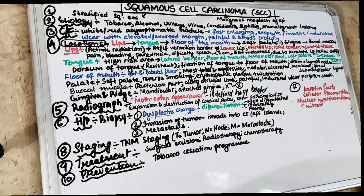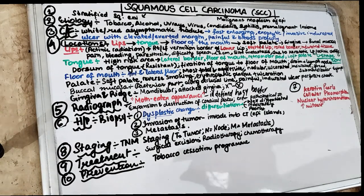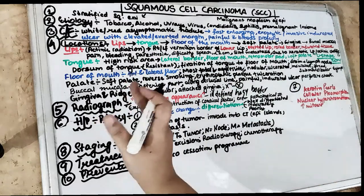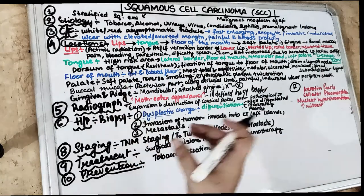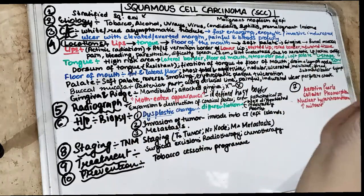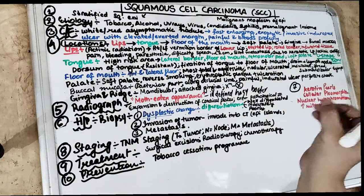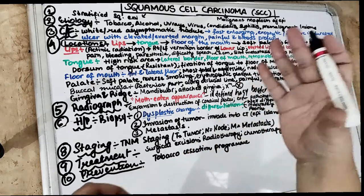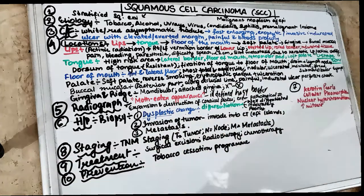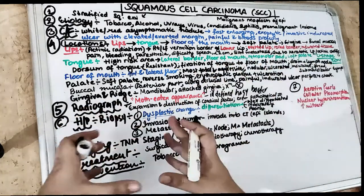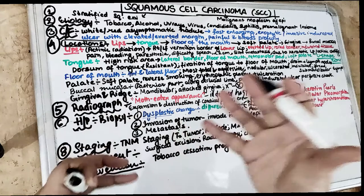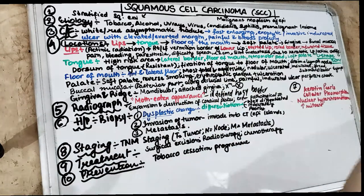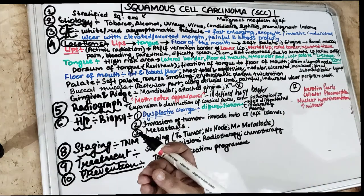Hello friends and welcome back to our 10 in 10 series where we cover each topic under 10 headings in 10 minutes. Today's topic is squamous cell carcinoma. Squamous cell carcinoma is also known as oral cancer because this is the most malignant cancer which is commonly seen in the oral tissues.